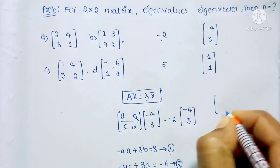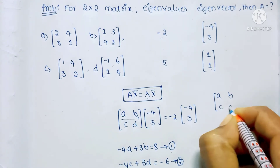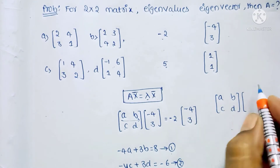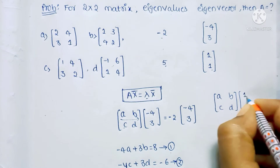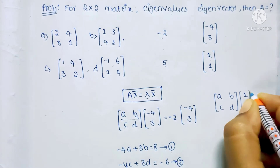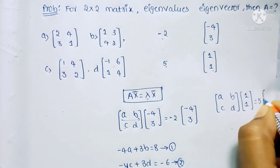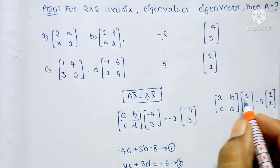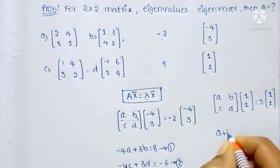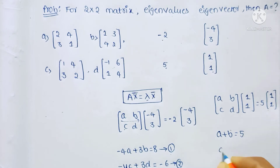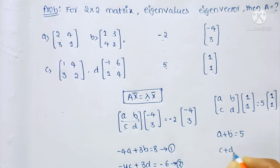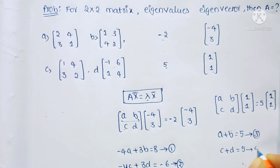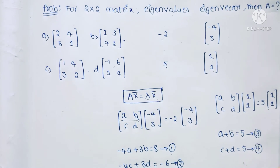For eigenvalue λ = 5 and eigenvector [1, 1], expanding gives a + b = 5 (equation 3) and c + d = 5 (equation 4).